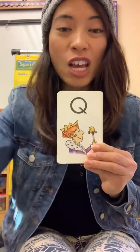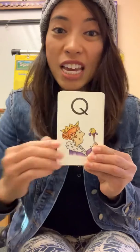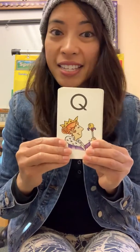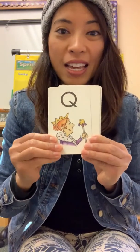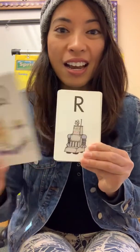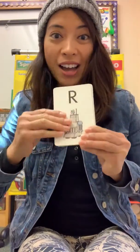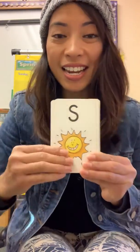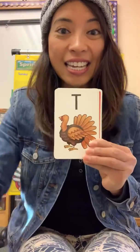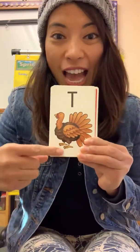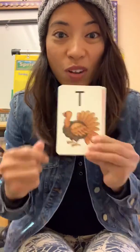P is for pumpkin. Q is for queen. She is nice and never mean. R is for robot. S is for sun. T is for turkey. Look at his quick feet run.